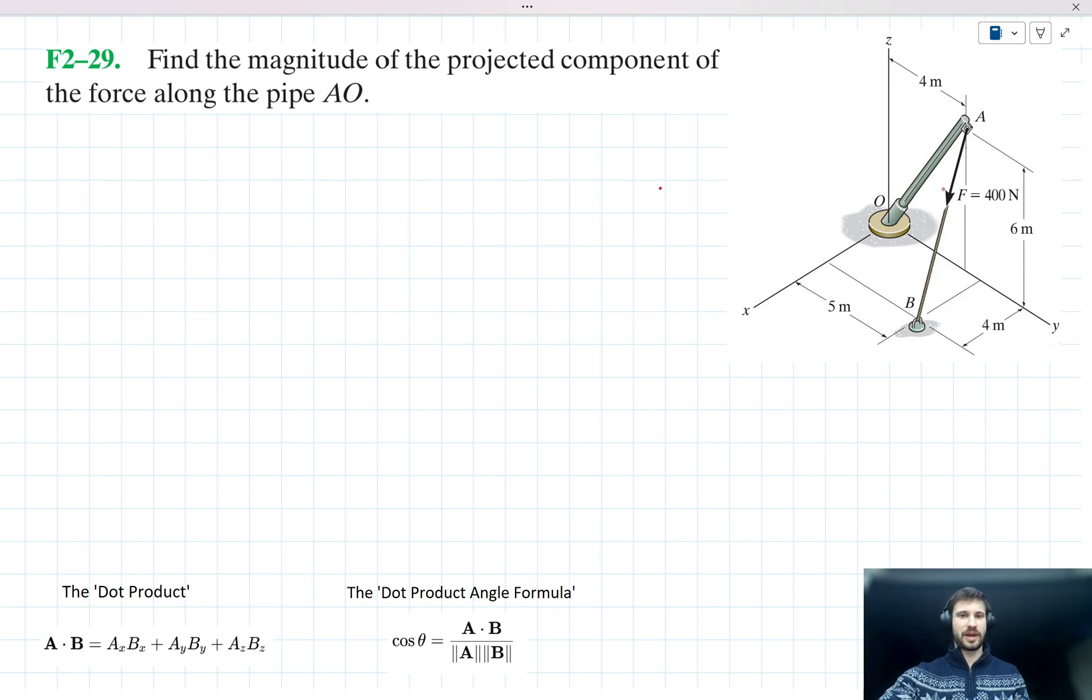Where we have this diagram here, we have this force F pulling down on the pipe which is in line with rope AB. The question's asking us to find the magnitude of the component of that force acting along AO. So let's show what it's asking us to find. It's effectively asking us to find this, where this red vector that I've shown here is a component of force F.